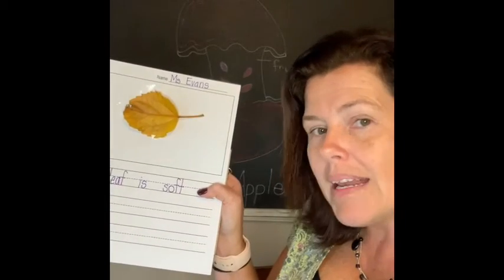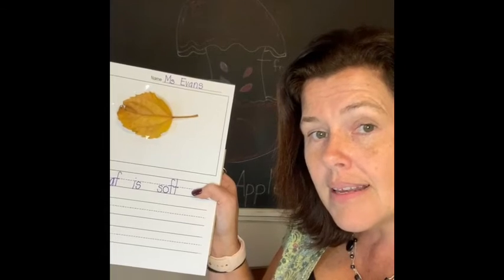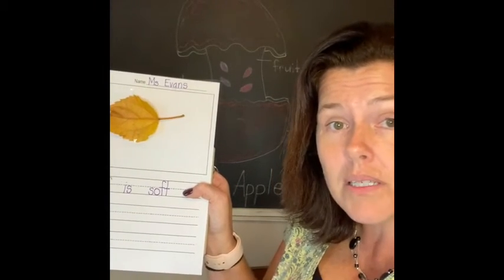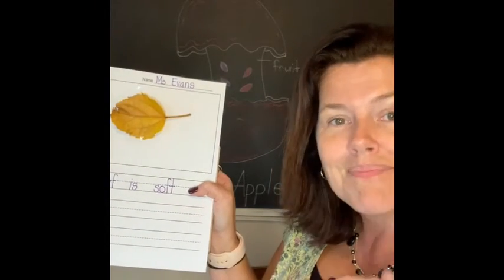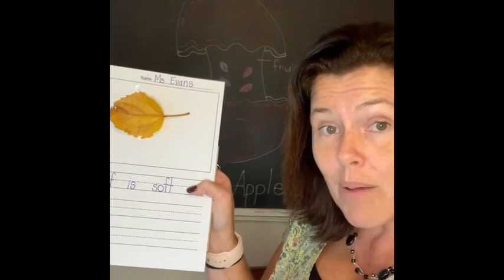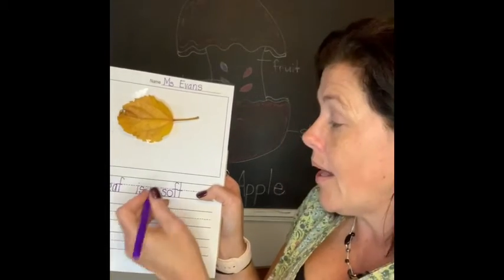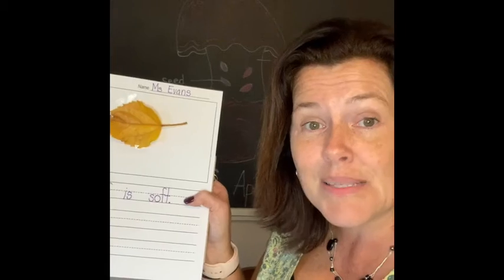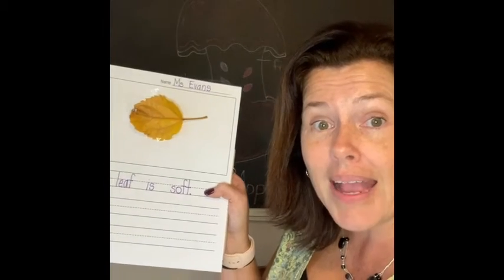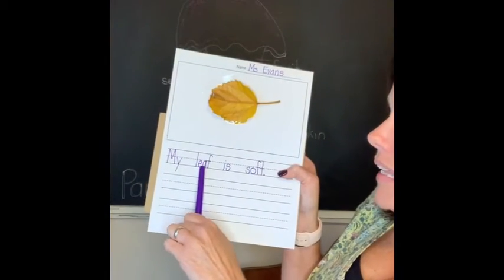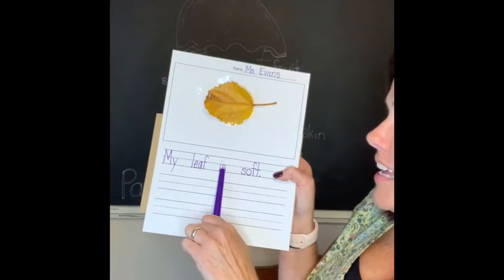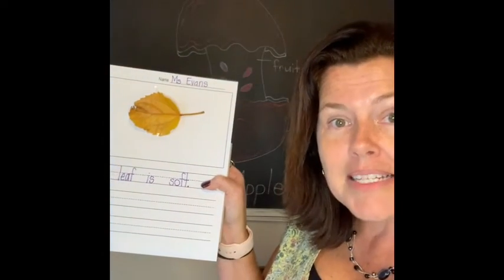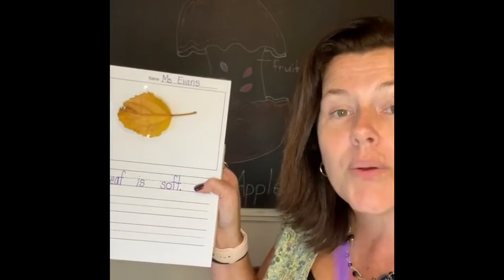What do we need to add on the end of that sentence to let everybody know we're done with this thought? Some punctuation — and this time we're going to use a period. Let's make sure that this sentence makes sense. 'My leaf is soft.' It made sense, didn't it? That's right.